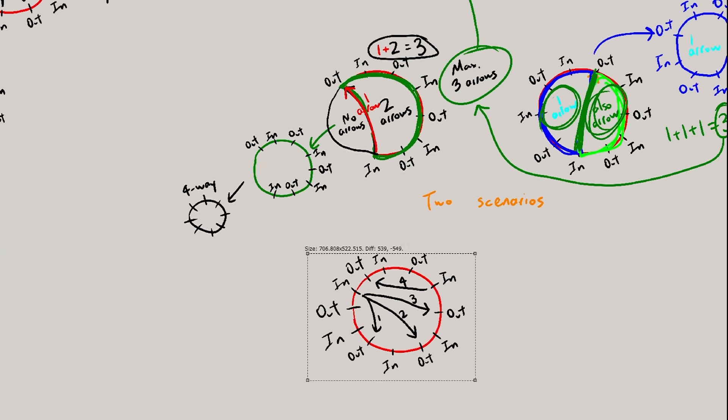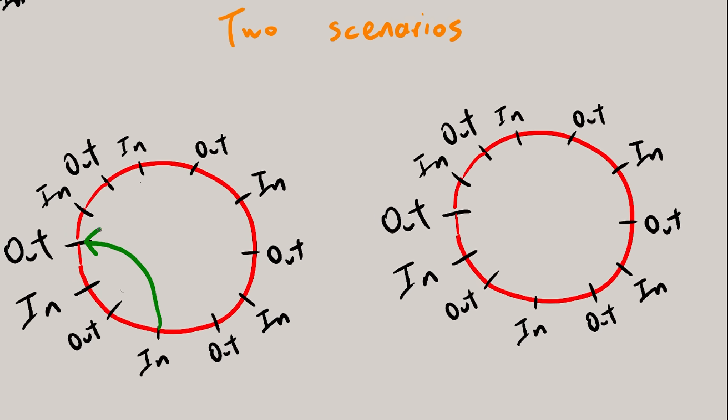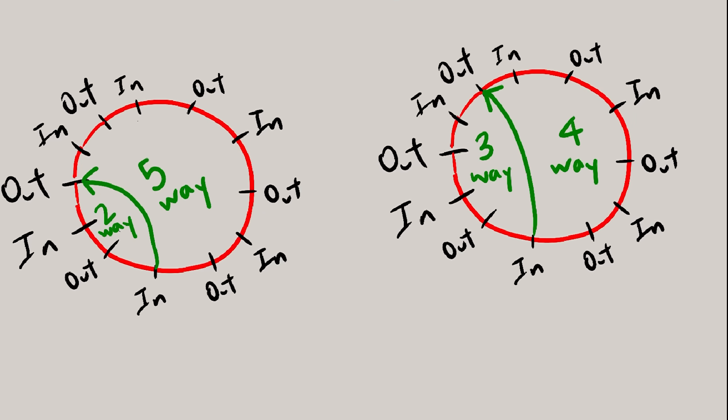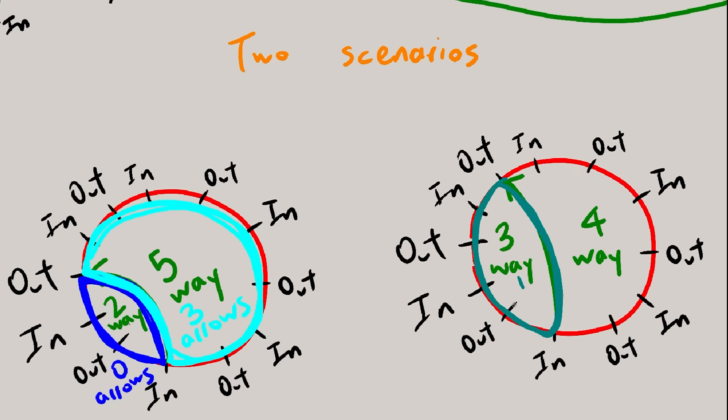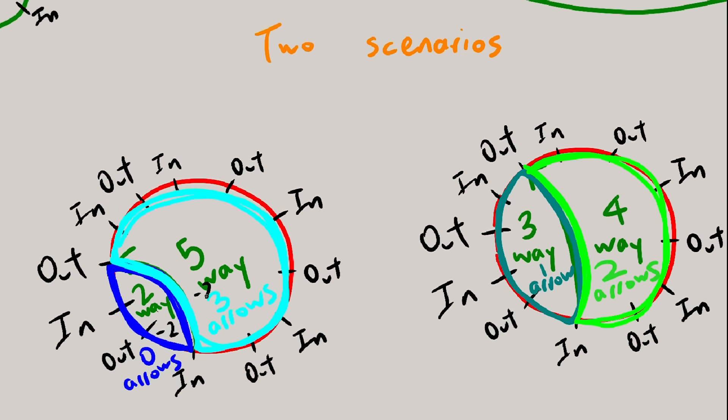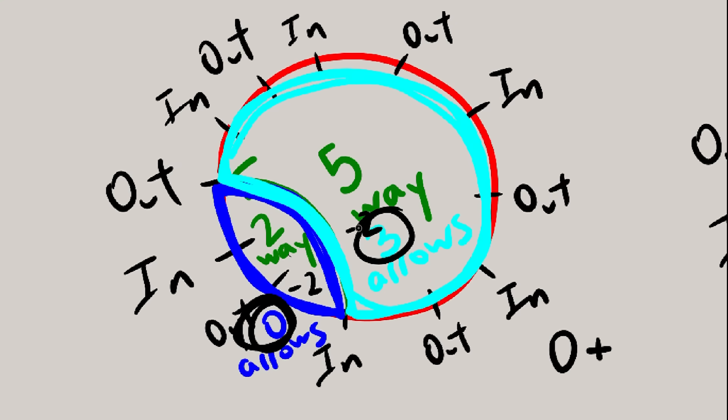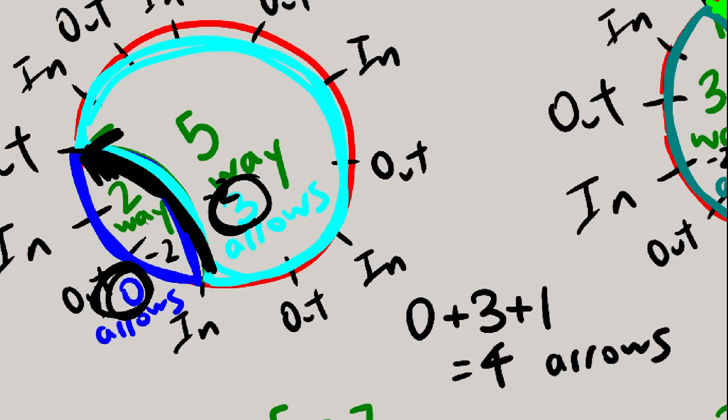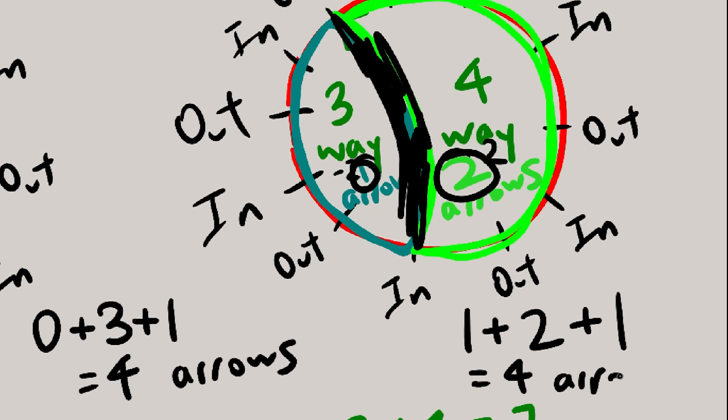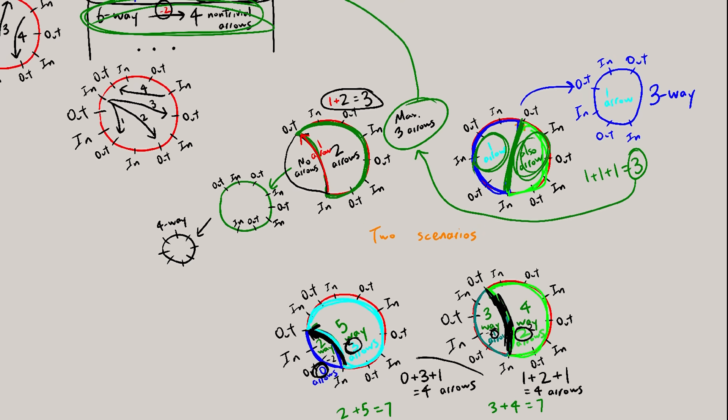6-way now! You know the drill, non-trivial arrows can split the 6-way into 2-way and 5-way, or it can split it into 3-way and 4-way. Hmm, these both add up to 7. Anyway, 2-way has 0 arrows, 5-way has 3, 3-way has 1, and 4-way has 2. Remember, you just subtract 2 to get the number of arrows. 0 plus 3 plus the arrow doing the splitting equals 4. 1 plus 2 plus the splitting arrow also equals 4, so the maximum for 6-way is 4.